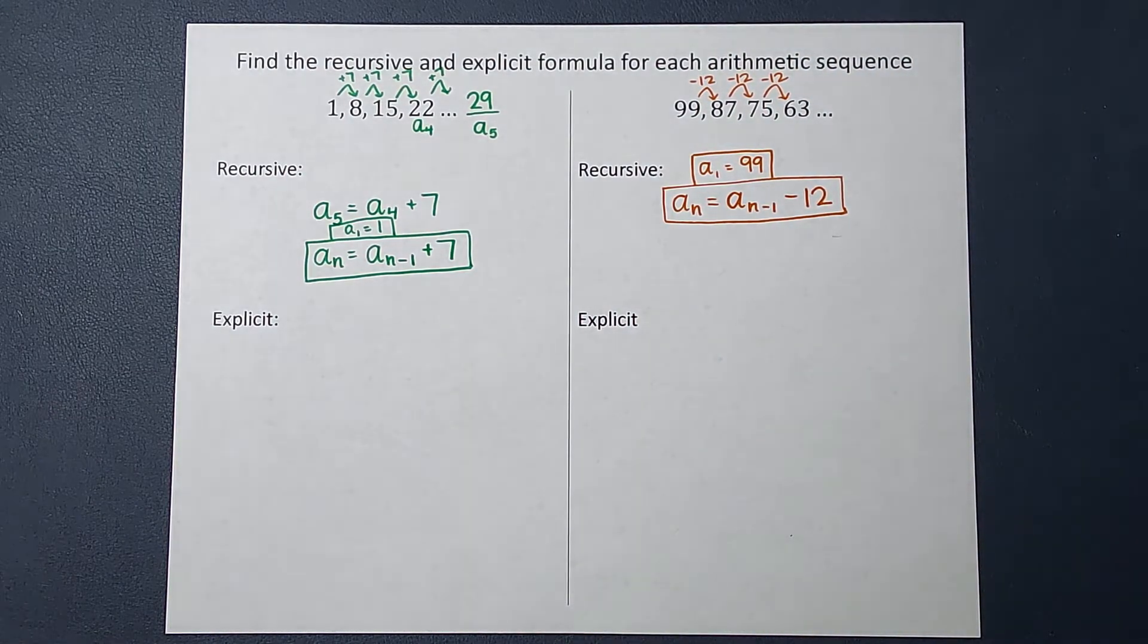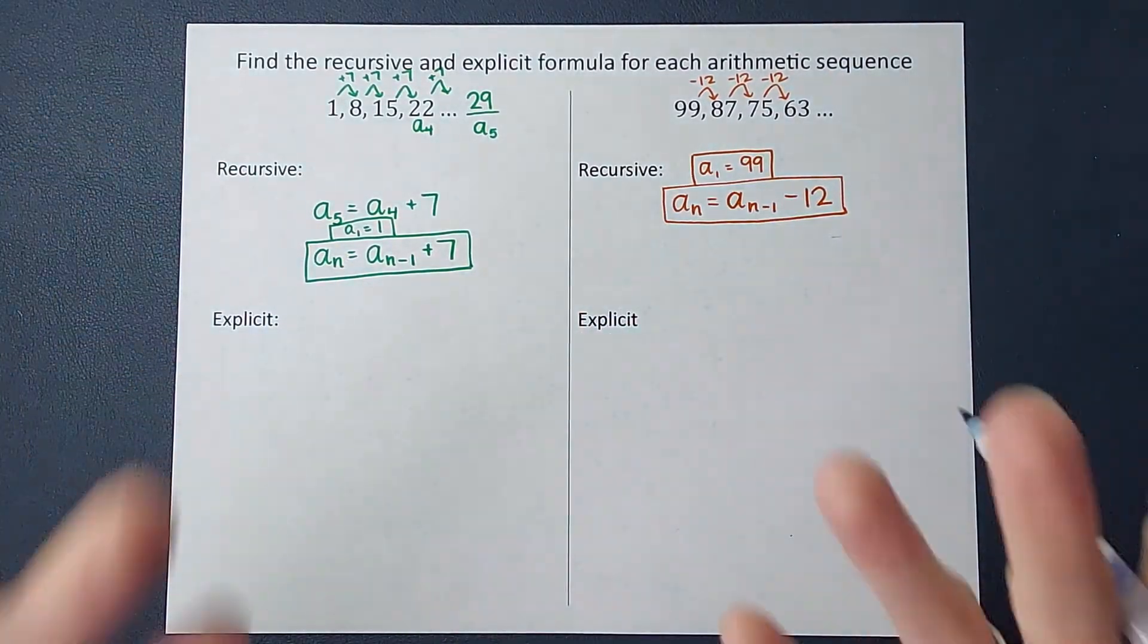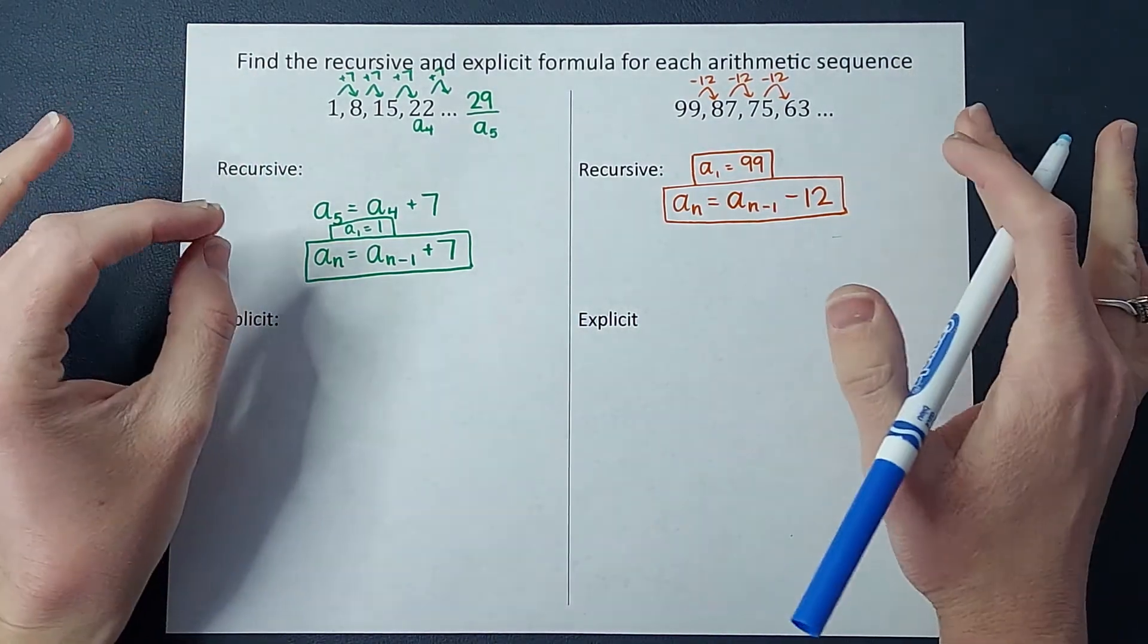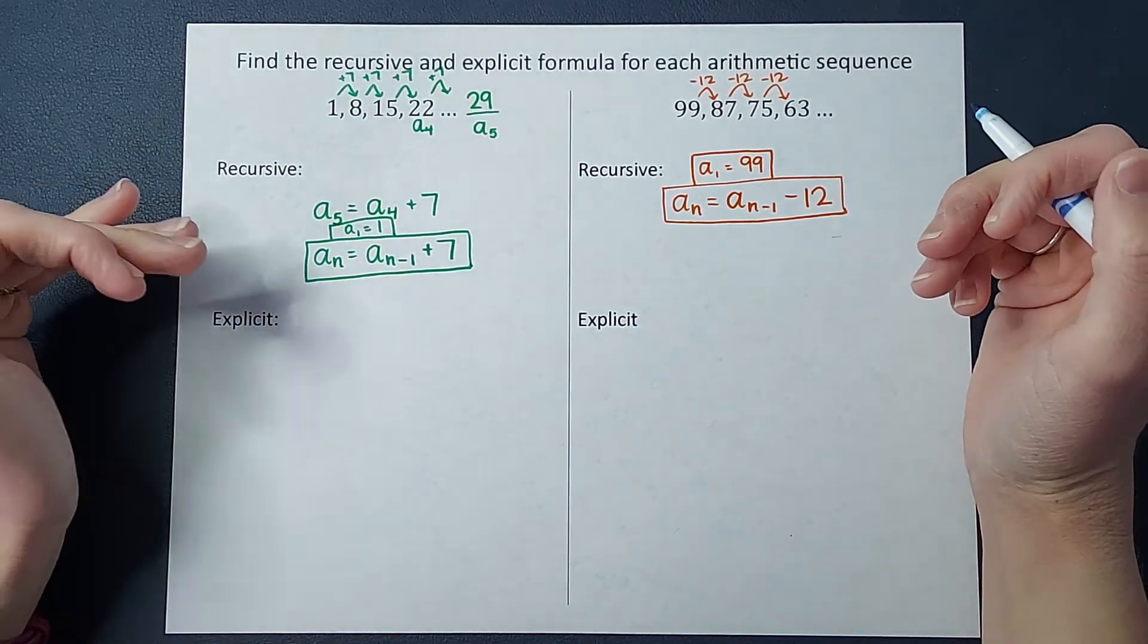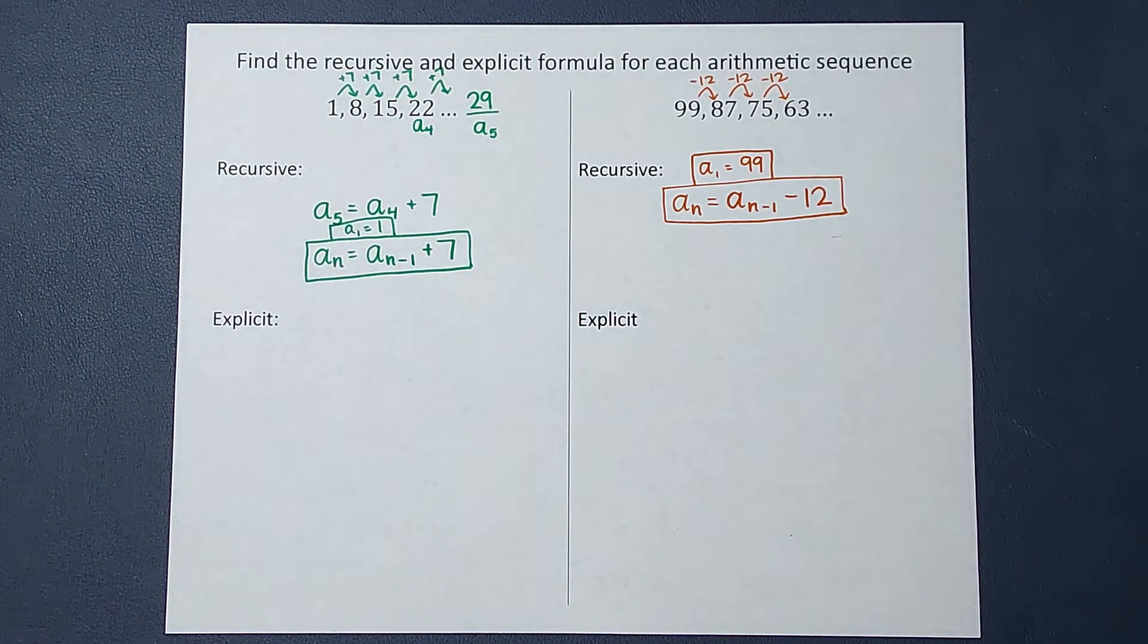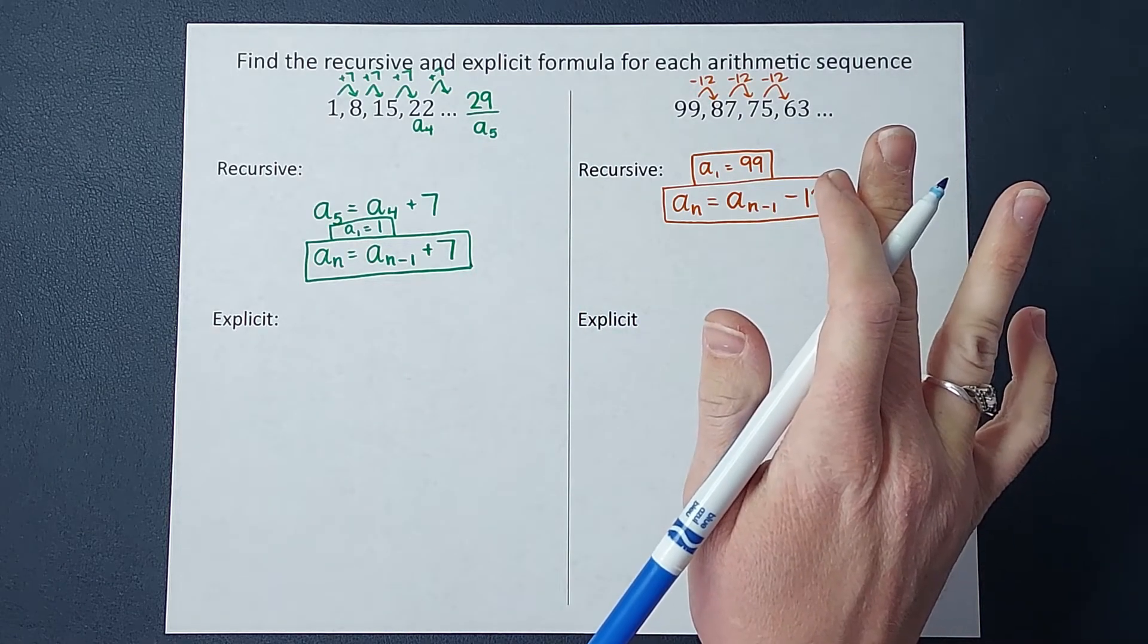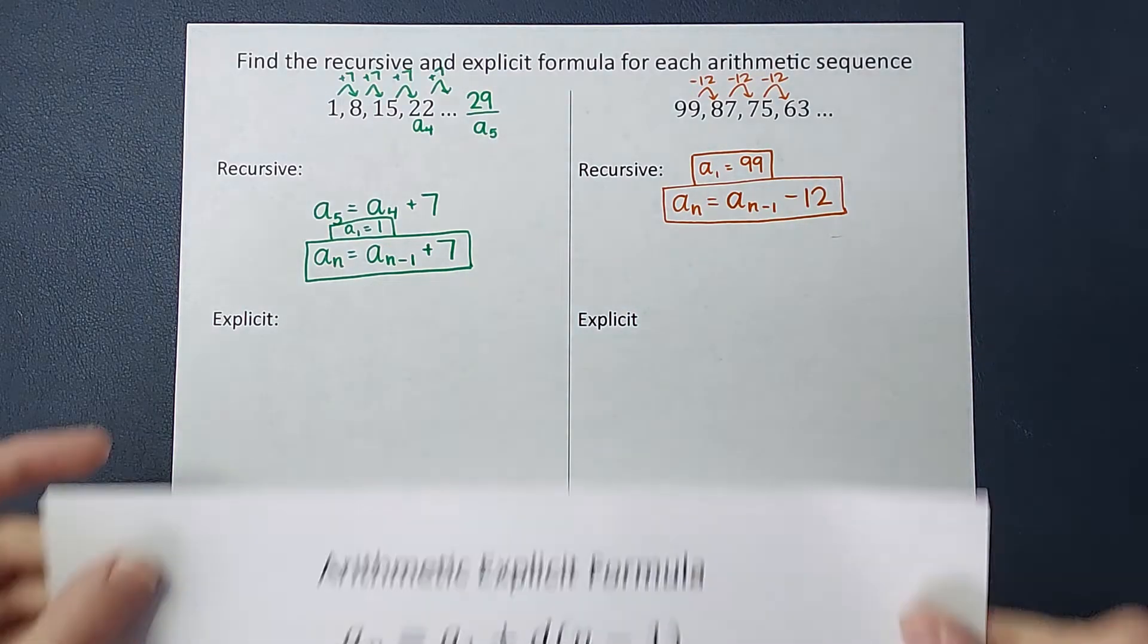We are moving on to explicit formulas. Why are they called explicit? I don't know, but we're not going to say bad words for this guy. Remember we talked about for these ones, you have to know the term before, which has its limitations. For explicit, guess what guys? Once we find our explicit formula, you can be like, hey, I want to know the 111th term and you can just plug it in and you don't have to know the one before it. So how are we going to find that? Listen, I'm going to show your formula, but I don't want you just to memorize it. We're going to talk about it so you understand why we're plugging in what we're plugging in.